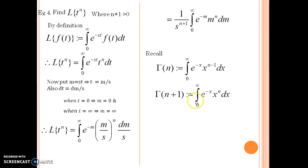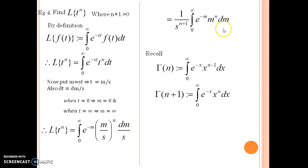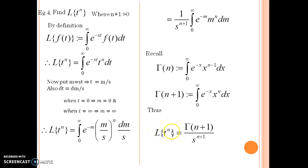This integral is the same as our integral — the only change is that instead of variable m, we have variable x. But under integration, the variable can be treated as a dummy variable. Thus, our integral is nothing but gamma of n plus 1. Therefore, Laplace of t to the power n is gamma of n plus 1 upon s to the power n plus 1.